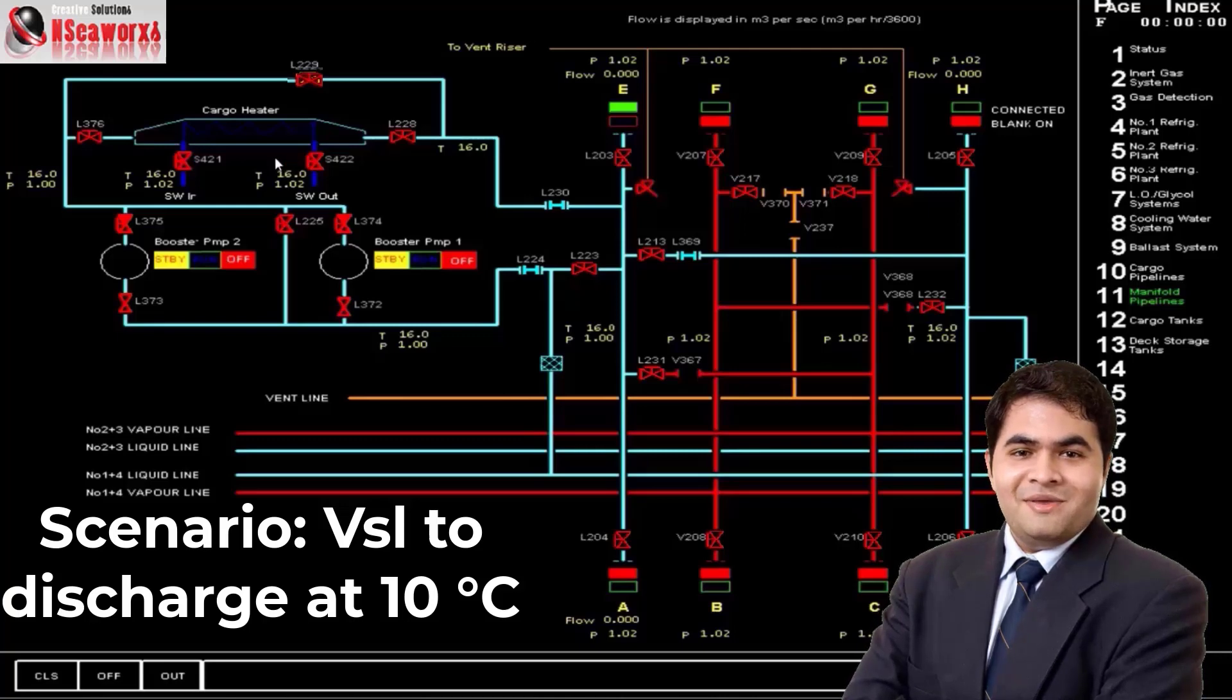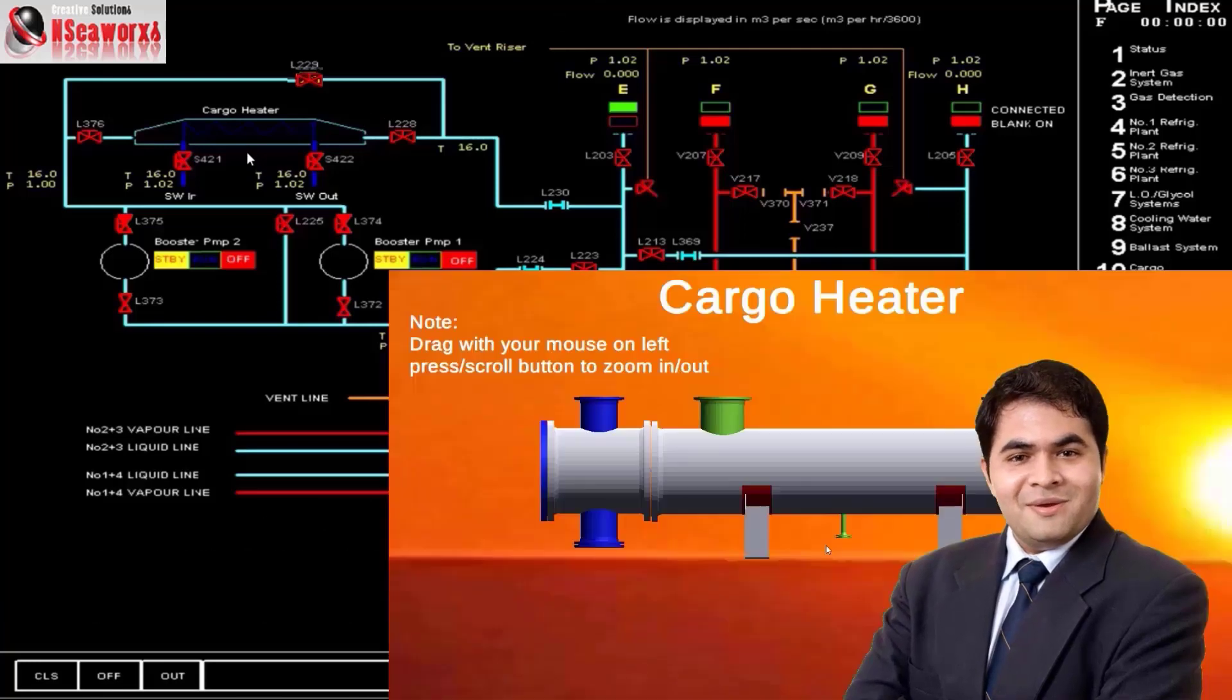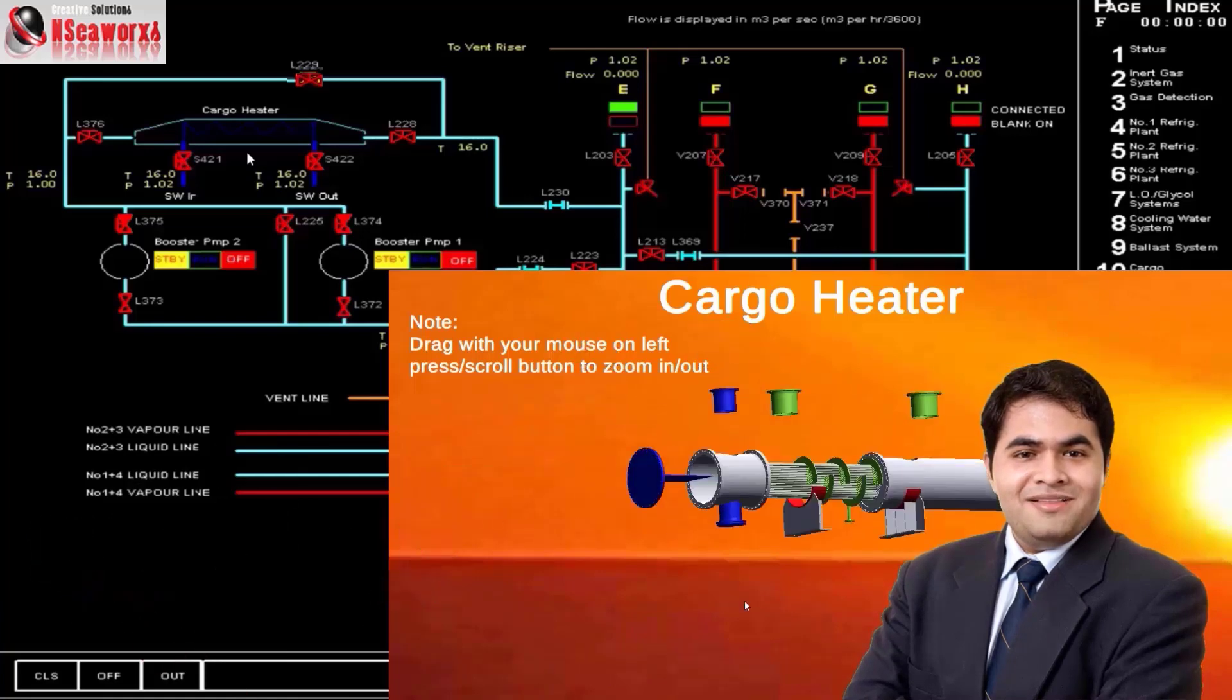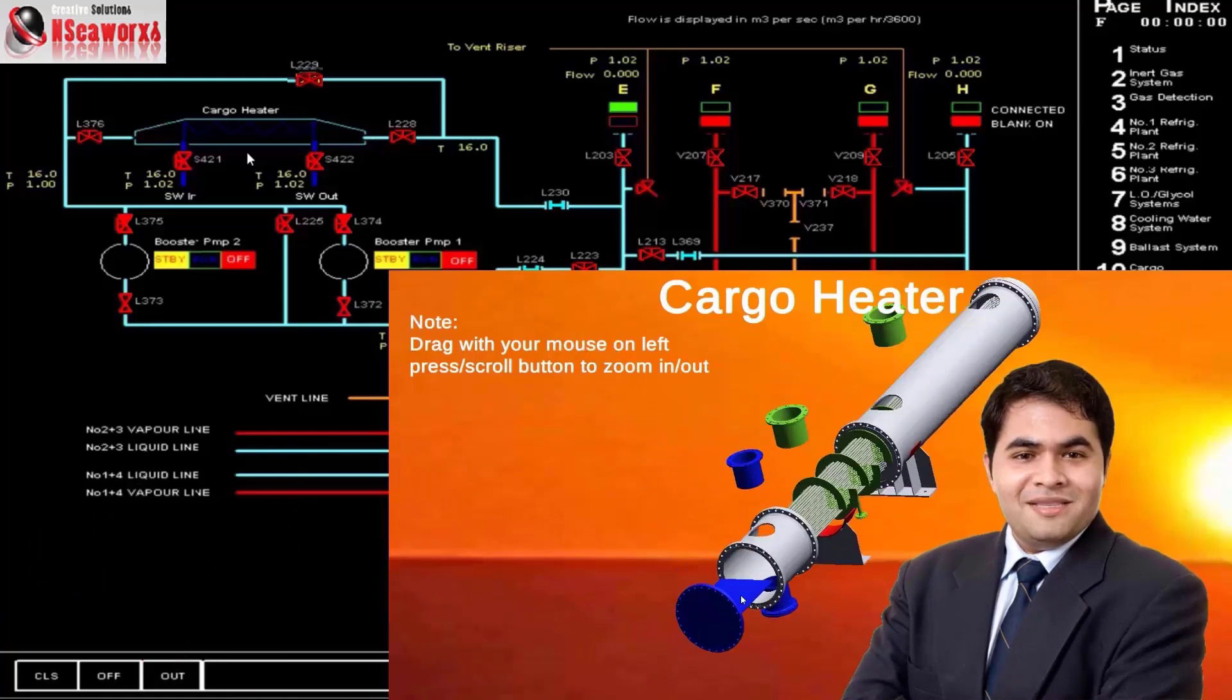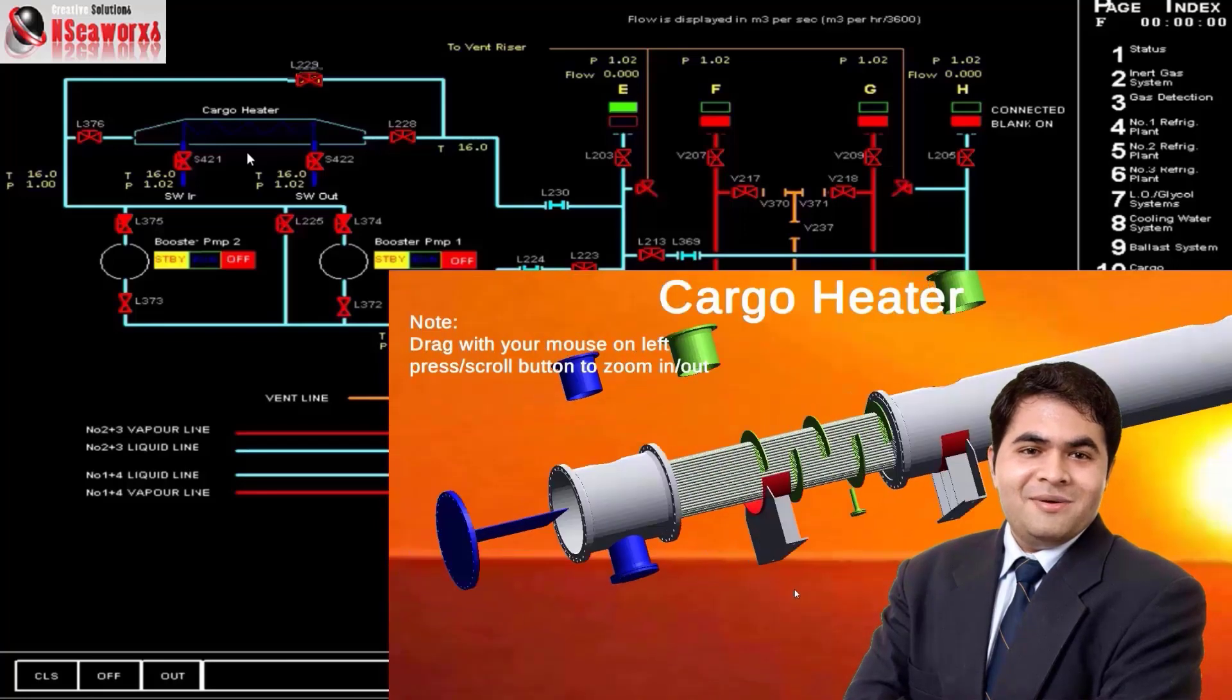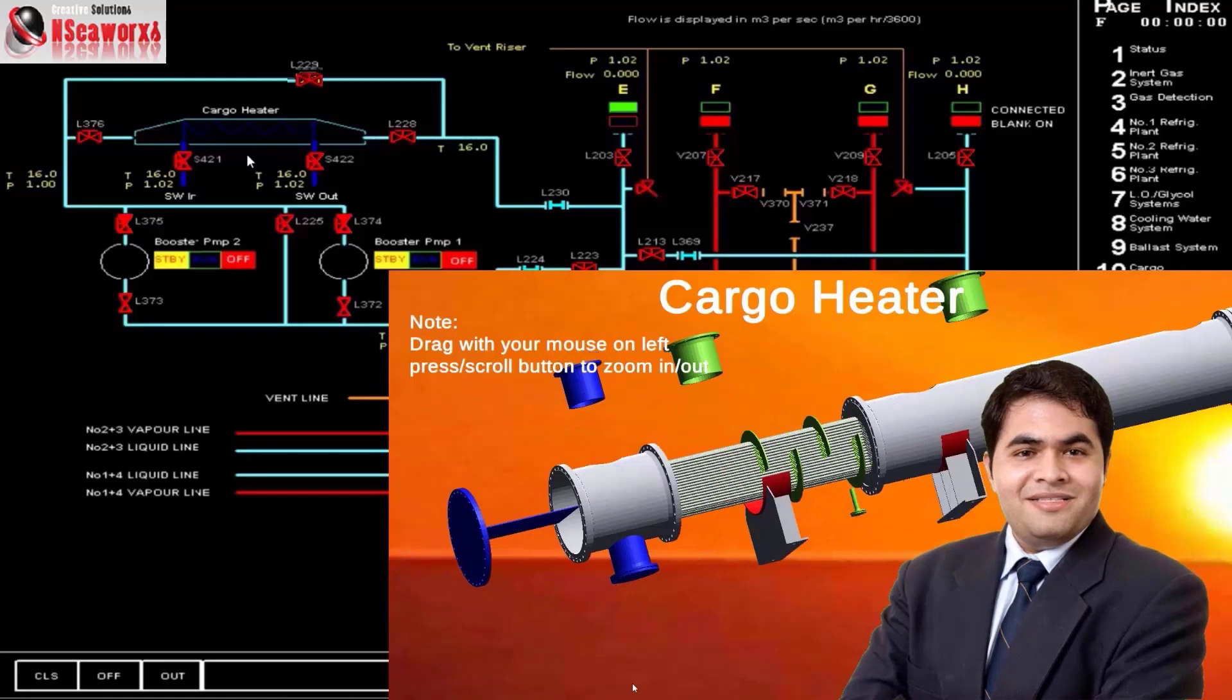In this scenario, the first thing that we can do is make sure that the shell tube casing are drained so there is no condensation inside because we will be passing cold cargo in there, and it might freeze up, and you will have a problem. We have to make sure that it is drained.